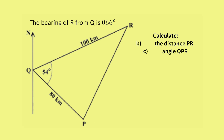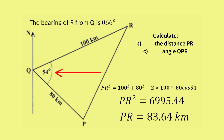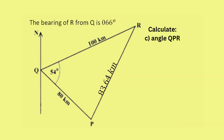The sine rule cannot help in part b since we don't have an angle and its corresponding opposite side, so we use the cosine rule to find the length of PR. Putting PR squared on the left, on the right we place the sum of the squares of the other two sides minus two times their product: 100 squared plus 80 squared minus two times 100 times 80 times cosine 54 degrees. This gives PR squared equals 6995.44, so PR equals 83.64 kilometers.